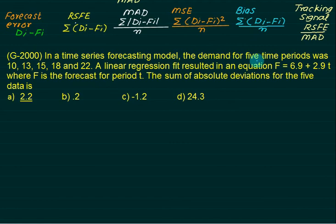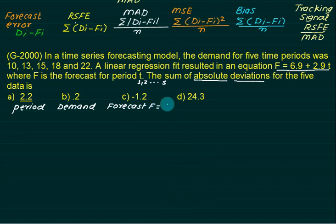In a time series forecasting model, the demand for five time periods was 10, 13, 15, 18, and 22. A linear regression resulted in the equation F equals 6.9 plus 2.9t, where F is the forecast for period t. We want to find the absolute deviation for the five data. We'll prepare a table with columns: period, demand, forecast, and error forecast.